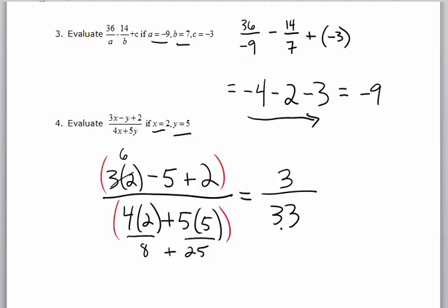So I've done all the order of operations work but I'm not quite done. Anytime I have a fraction as an answer, I want to try and reduce it. In this case, 3 will go into both of those numbers. My final answer for that one will be 1 over 11.